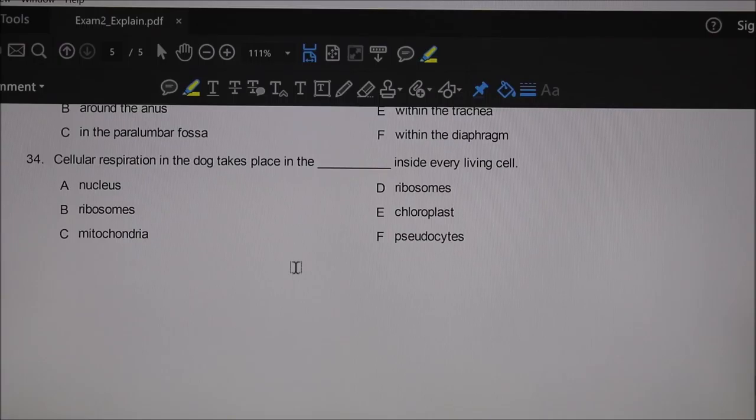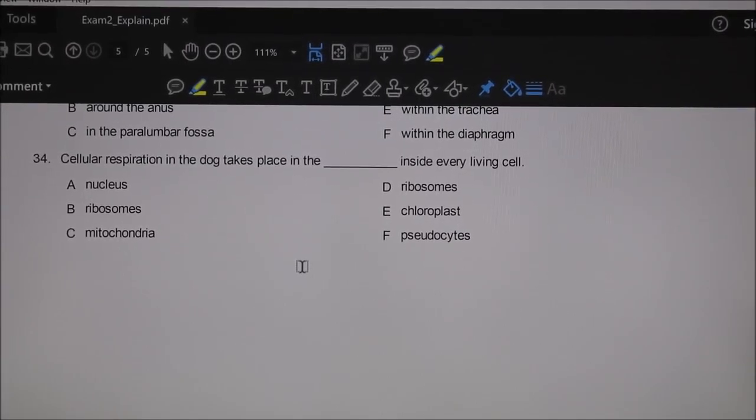Thirty-four: cellular respiration takes place in the blank inside every living cell. I can't remember exactly where that was from, but the answer is mitochondria. It might have been in the reading. Somebody did point out I had two answers the same—ribosomes here and ribosomes there. It's a typo of mine, but mitochondria is where cellular respiration takes place.